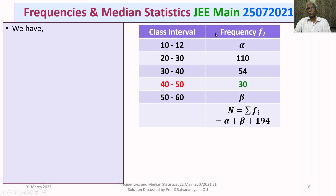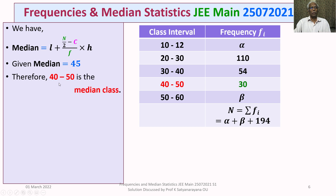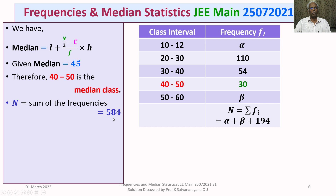We have the formula for the median: Median = L + ((N/2 − C) / F) × H. The median is given as 45, and since 45 belongs to the class interval 40 to 50, that is the median class. L is the lower limit of the median class, which is 40. N is the sum of all frequencies, equal to 584.